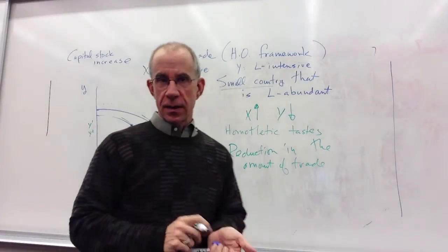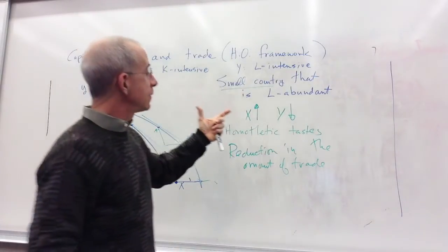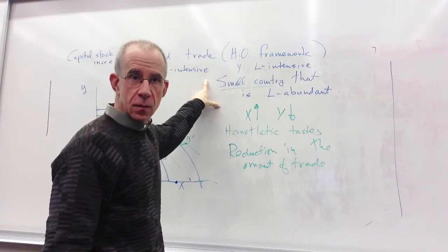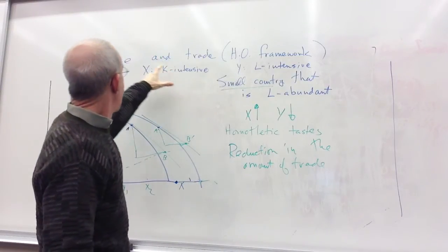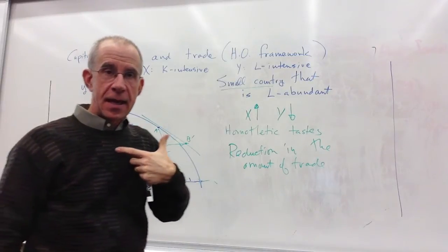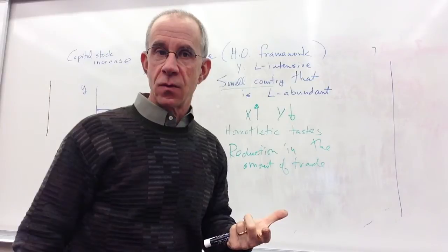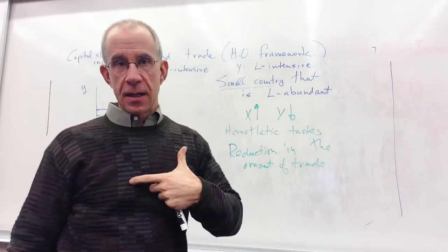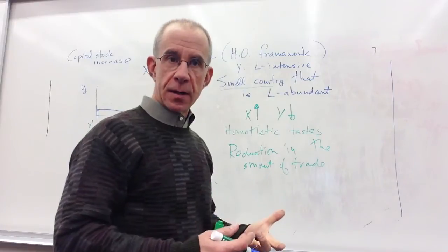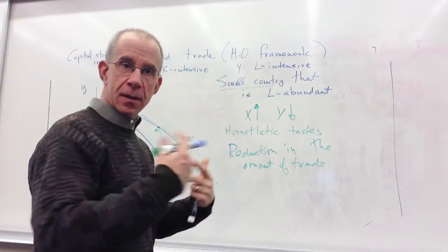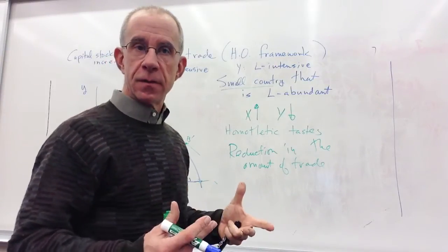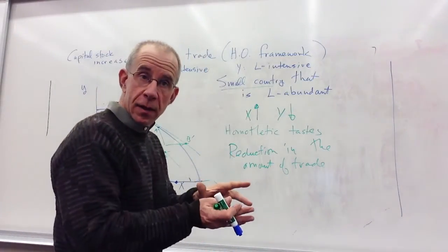This is really quite intuitive. In the Heckscher-Ohlin framework, this country exported good Y because it was labor abundant relative to the rest of the world. As there's an increase in the capital stock, the country is becoming more like the rest of the world — the incoming capital reduces the amount by which it's labor abundant. So the accumulation of capital tends to decrease the incentives to trade because the country is not as different from its trading partners as before, and the amount of trade contracts.